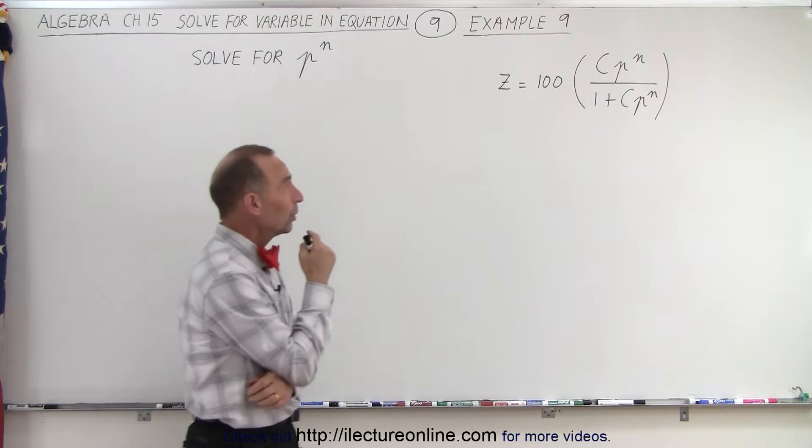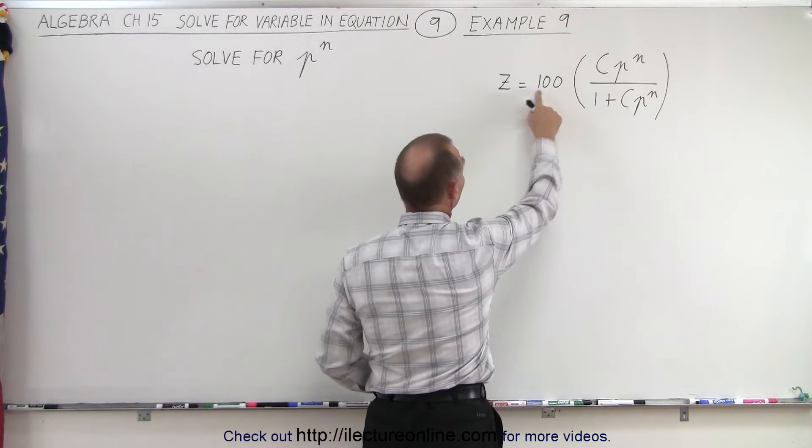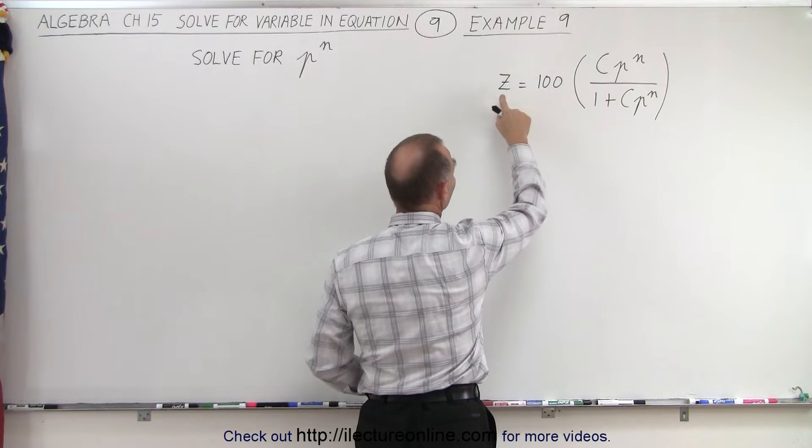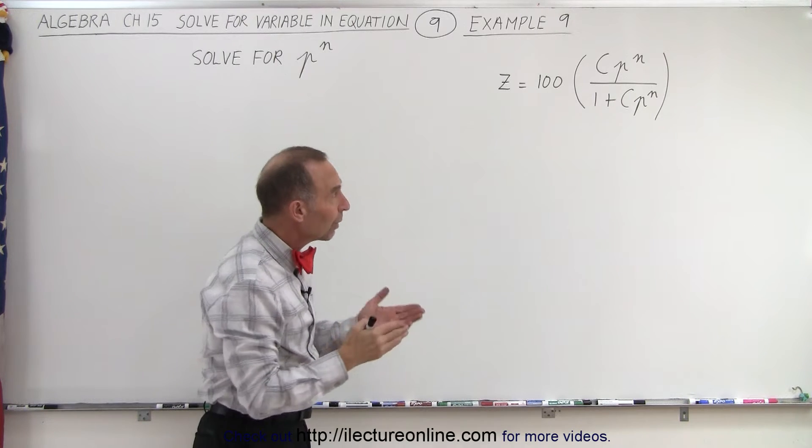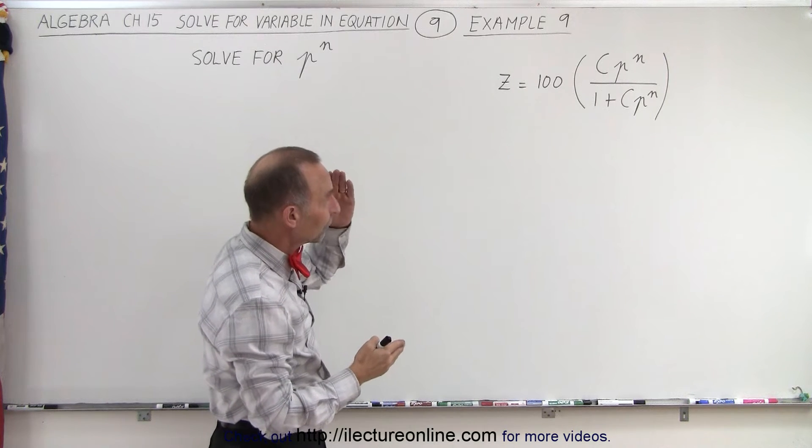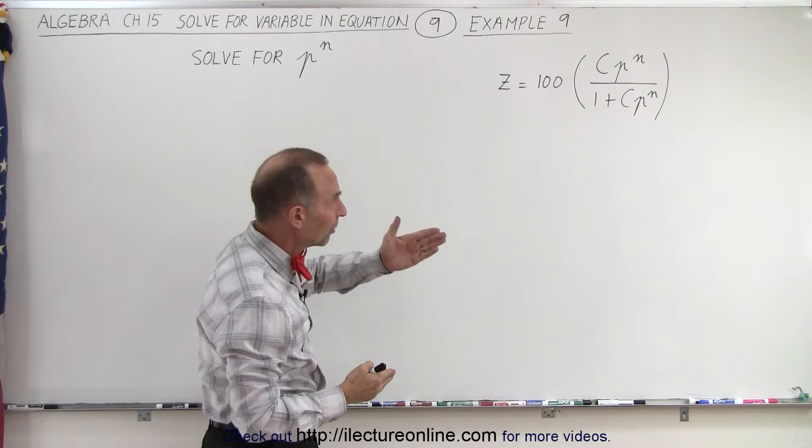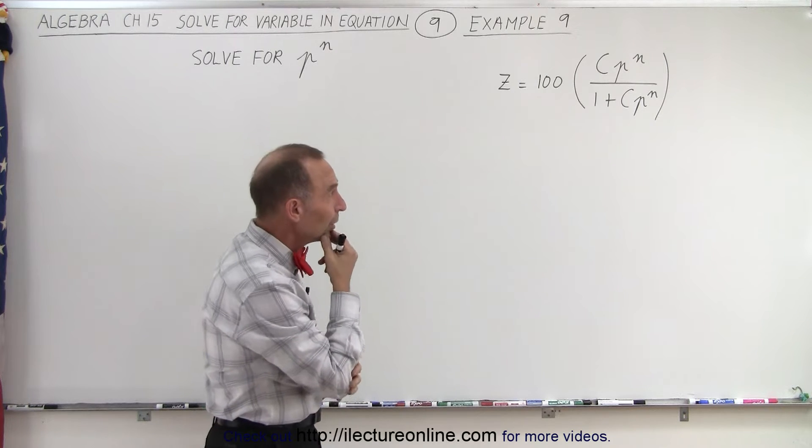So the first thing we might want to do is get rid of the 100 and divide both sides by 100. So we have z divided by 100 equals that particular fraction. But ultimately, when we have something like that, we have the variable in the numerator and the variable in the denominator of that fraction. You may want to have a strategy...